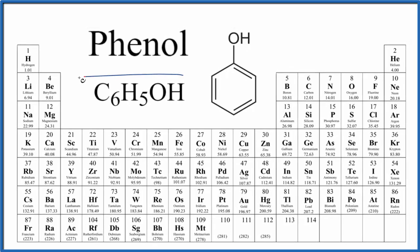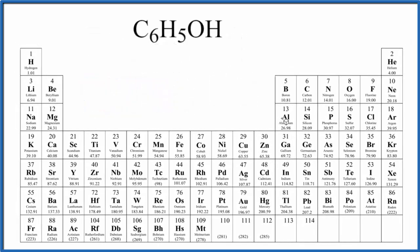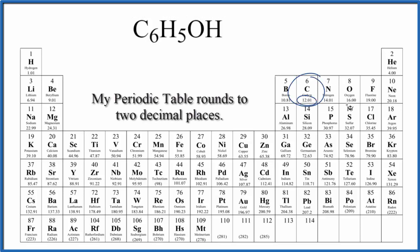Carbon we have 12.01, and the units are grams per mole. I won't write that at this point, we'll write that at the end. Six carbons, so we multiply that by six. Then for hydrogen we have 1.01 grams per mole.